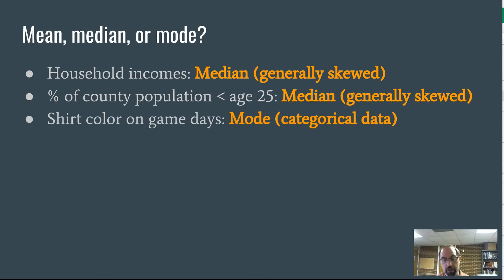Shirt color on game days. Shirt color is a categorical variable. It's a color: red, black, white, whatever color else that you'd see. You'd be counting each one of those, which one shows up most often. Chances are, I'm assuming red would be your mode of shirt color on game days.